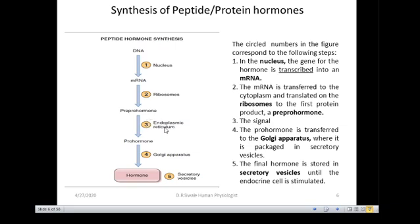The pre-pro-hormone in the endoplasmic reticulum is cleaved and modified to form what we call a pro-hormone. The pro-hormone is then transferred to the Golgi apparatus where it is packaged into secretory vesicles. The final hormone is stored in secretory vesicles until the endocrine cell is stimulated by an appropriate stimulant. This is the general mechanism involved in synthesis of peptide hormones.